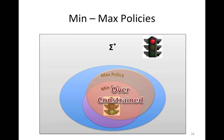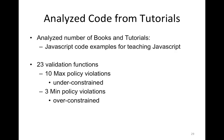Notice that although we use regular expressions to write policies, and we may also use regular expressions to do validation, the reason for writing two policies is that your function can return inputs in between these policies. We analyzed 23 validation functions from books and tutorials and found 10 maximum policy violations where the functions were under-constrained, and 3 minimum policy violations where the functions were over-constrained.